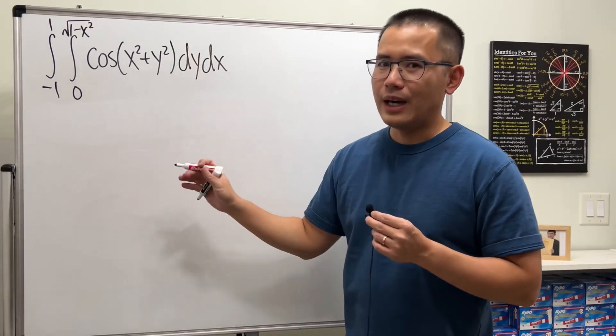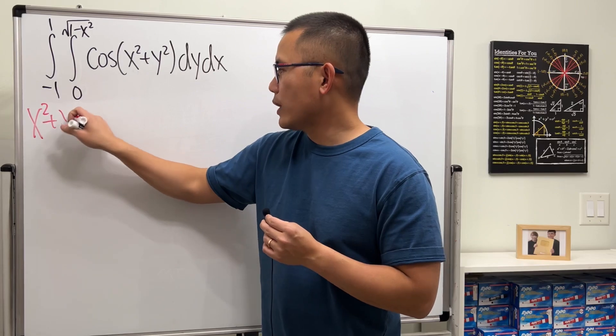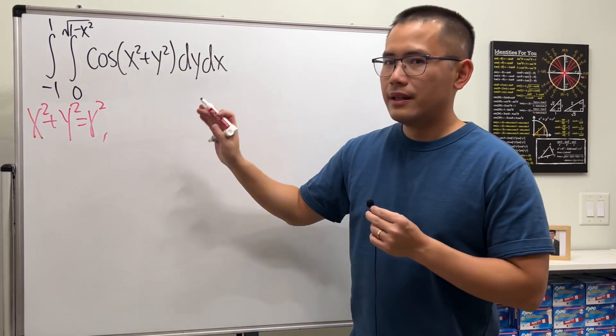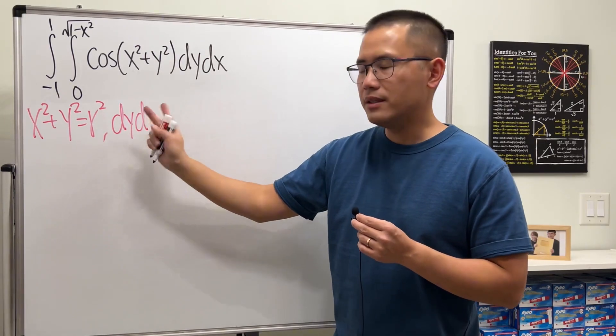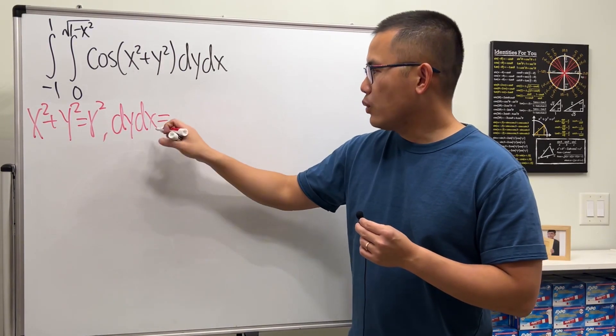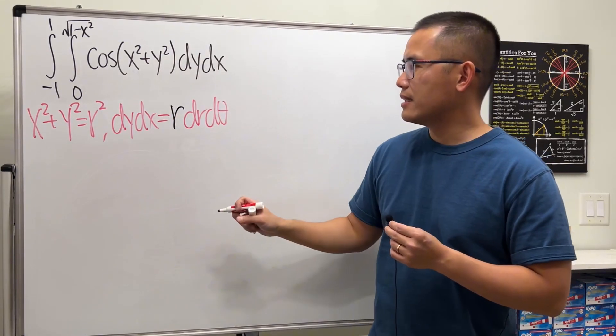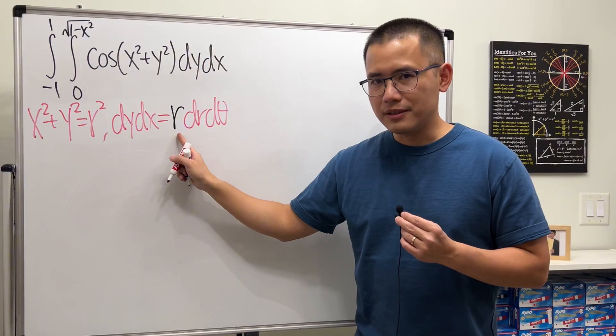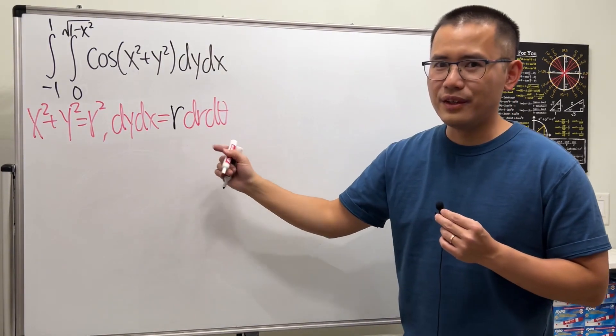Let's see how we can use polar to help us out. First, remember x squared plus y squared equals r squared. Then the differential dy dx or dx dy doesn't matter equals r dr dθ. A lot of people forget about this r, so please remember it. To see why, I will have a video in the description for you.